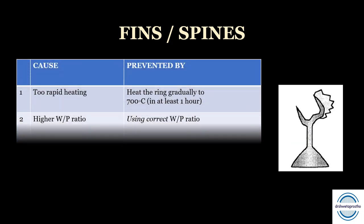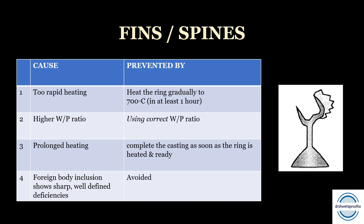Fins and spines result from cracks in the investment material, caused by too rapid heating — prevented by heating the ring gradually to 700°C over at least one hour. A higher water-to-powder ratio also causes surface roughness, so the correct ratio must be used. Prolonged heating causes cracking leading to fins or spines, so casting should be completed as soon as the ring is ready. Foreign body inclusion causes sharp, well-defined deficiencies and is prevented by avoiding contamination during pattern fabrication or investing.